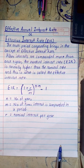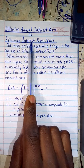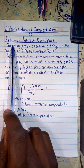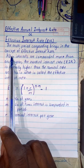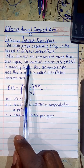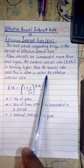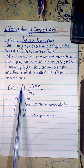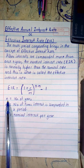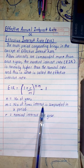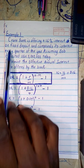The element of multi-period compounding brings in another concept: the Effective Interest Rate (EIR), also known as the Effective Annual Interest Rate. When interest is compounded more than once a year, the EIR is normally higher than the nominal rate. The formula is: EIR = (1 + r/m)^(n×m) − 1, where n is the number of years, m is the number of times interest is compounded in a period, and r is the nominal interest rate per year.